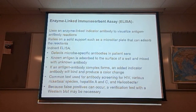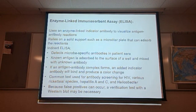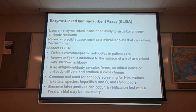The known antigen is adsorbed to the surface of a well and mixed with an unknown antibody. If the antigen-antibody complex forms, an added indicator antibody will bind and produce a specific color change. These are common tests for antibody screening for HIV, various rickettsial diseases, hepatitis A and C, and Helicobacter organisms. Because false positive tests can occur, a verification test with a Western blot may be necessary.